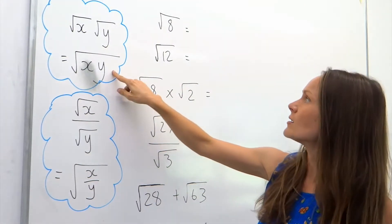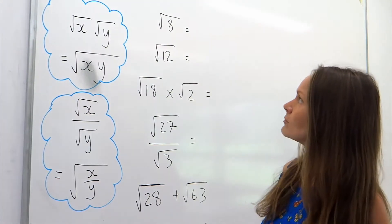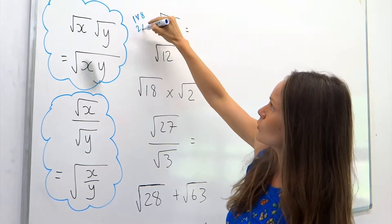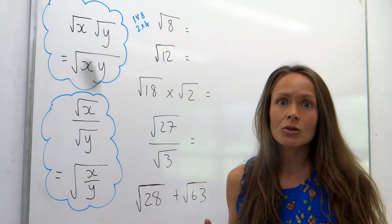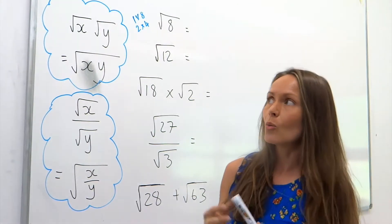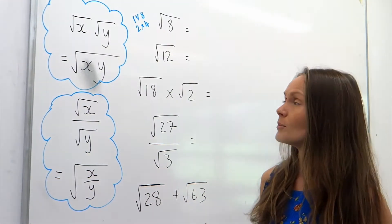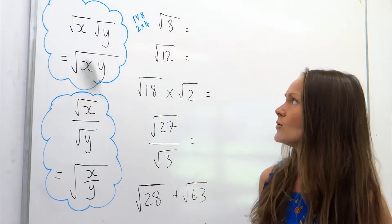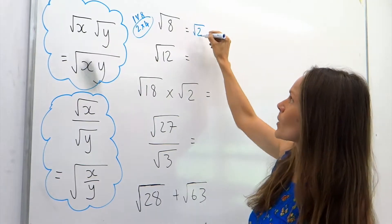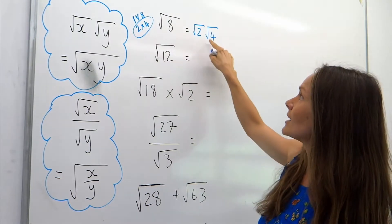In the first example I'm going to use this property and I need to split the number 8 up into its factors. The number 8 has two pairs of factors: 1 times 8, or 2 times 4. You need to choose the pair that includes a square number. Square numbers are 1, 4, 9, and so on - those are really important to know. So I'm going to use this pair here and rewrite the square root of 8 as root 2 multiplied by root 4.